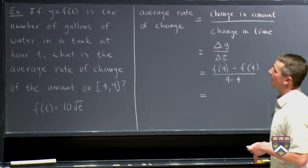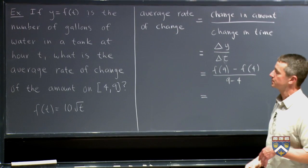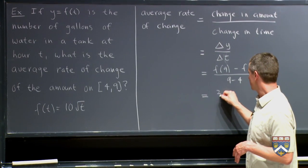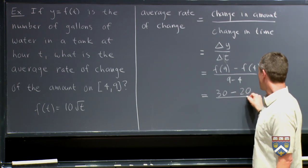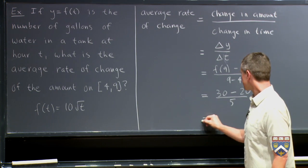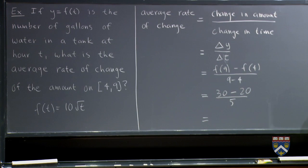And now we have to figure out what f of 9 is. If we plug 9 into our function, we get 10 square root of 9, which is 30. And this is 10 square root of 4, which is 20. And on the bottom we have 5. And if we simplify that, I think we get 2.